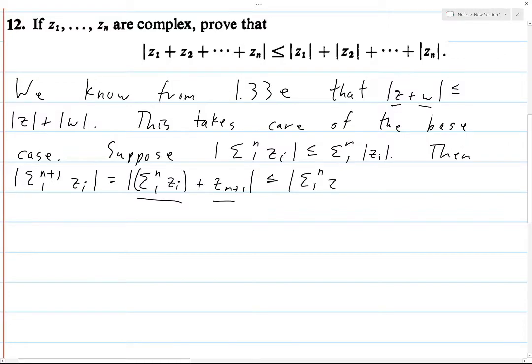We know from the inductive hypothesis that this inequality holds. So we have this is less than or equal to the sum from 1 to n of the norm of z_i, and we add the norm of z_{n+1}, so we get the sum from 1 to n+1 of the norm of z_i.